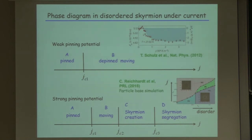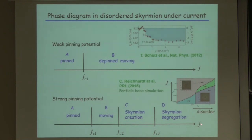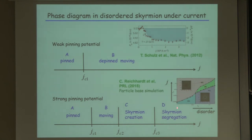If you go to the strong pinning potential, the phase diagram becomes very rich. We found four regimes if you increase the current density — three critical threshold current densities. The first is the usual depin transition. Further increasing the current, we have a regime where skyrmion creation occurs, and furthermore a skyrmion segregation regime. This is the disorder axis and this is the current axis.